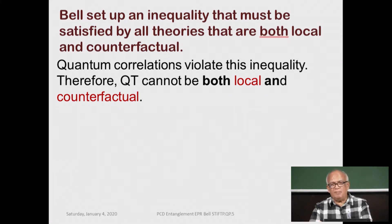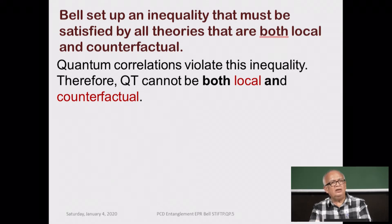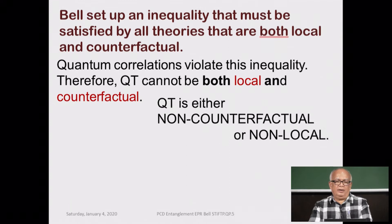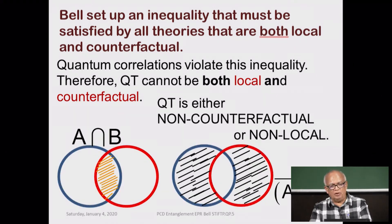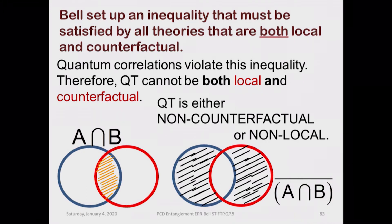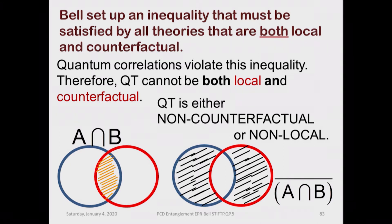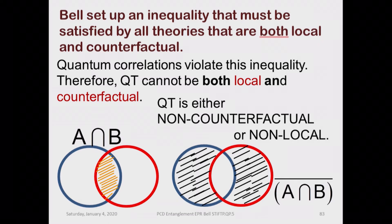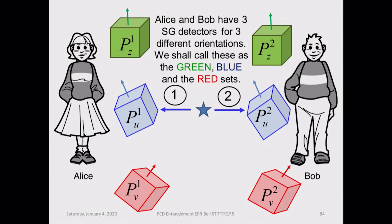Bell set up a mathematical inequality which must be satisfied by all theories. Any theory which is both local and counterfactual must satisfy this inequality. You are then led to the conclusion that quantum theory is either non-counterfactual or non-local. As we saw in the Venn diagram: if you have a theory which is both local and counterfactual, you are in the intersection of the two, and if you are led outside this intersection, then it is either one or the other.